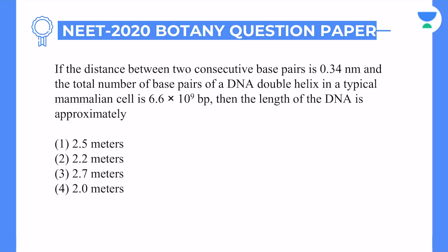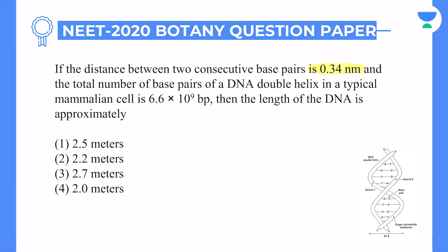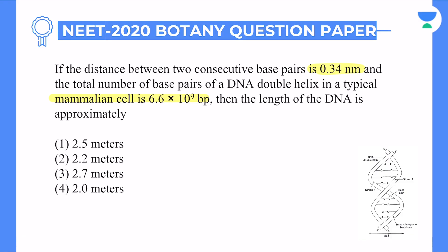The first question: if the distance between two consecutive base pairs is 0.34 nanometers, and the total number of base pairs of DNA double helix in a typical mammalian cell is 6.6 × 10⁹ base pairs — this is exactly what it is talking about for human cells — then the length of DNA is approximately.